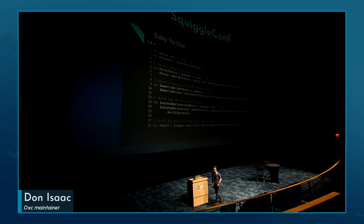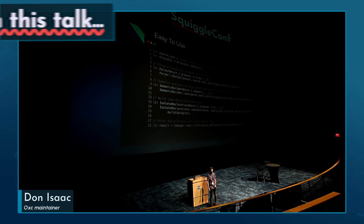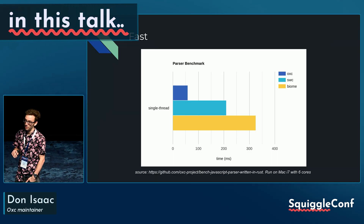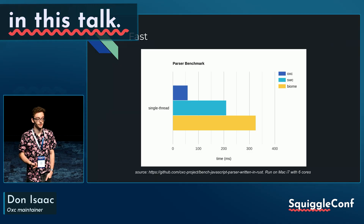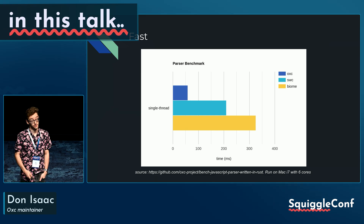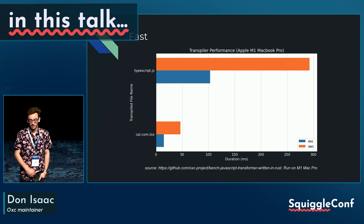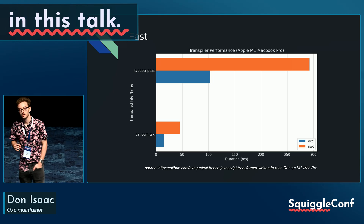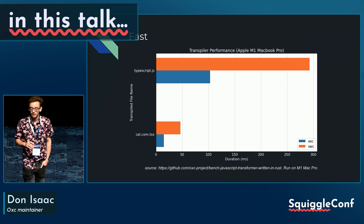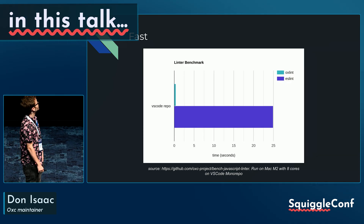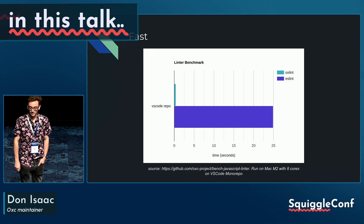But the main reason people are using our tools, primarily, is they're just super fast. Our parser is about three times faster than SWC's and five times faster than Biome's when run on a single thread. The transpiler is about three to four times faster, and the linter is 50 to 100 times faster than ESLint.